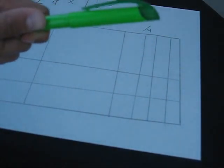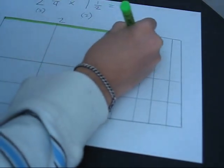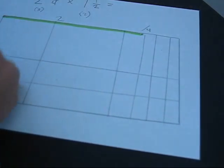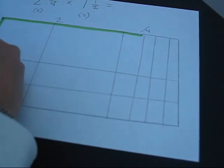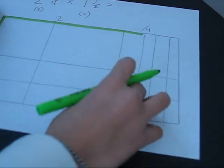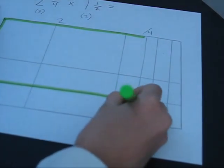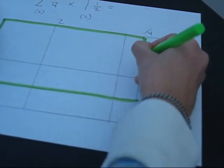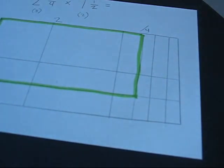Now we're going to get our highlighter and mark 2 and 1 fourth — so 2 and a fourth — and then 1 and 1 half — so we're going to half — and then we're going to connect those two. So this is a rectangle inside the other one.